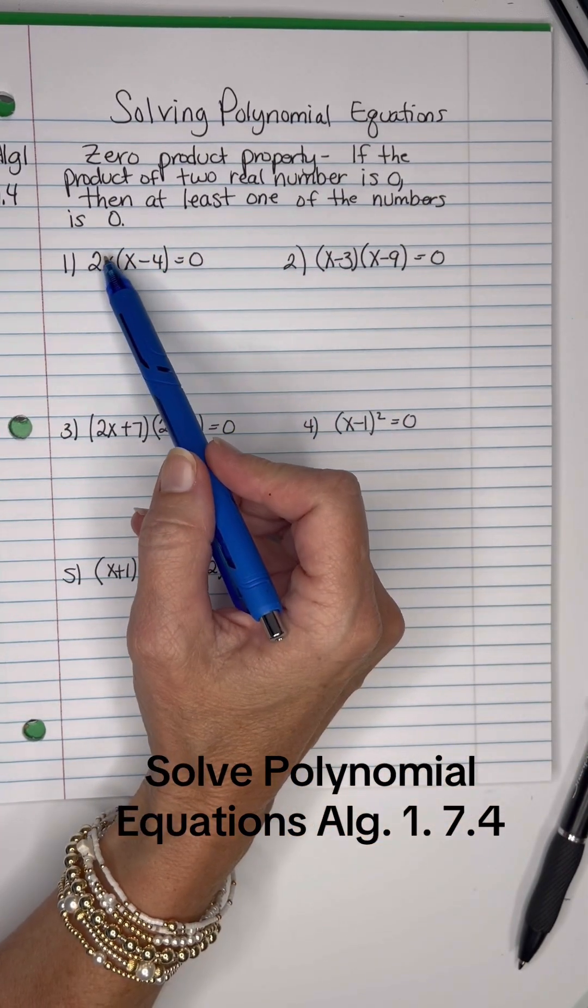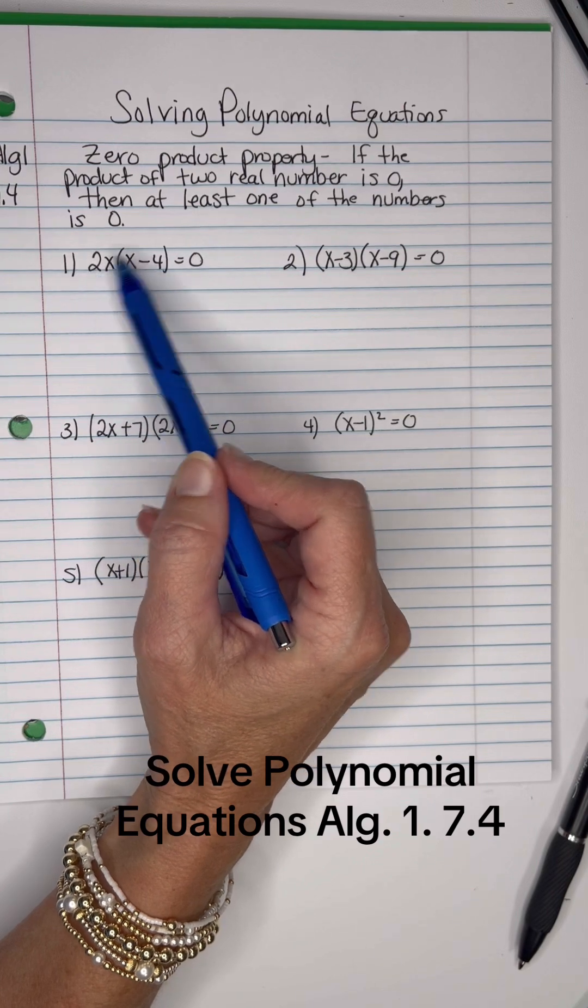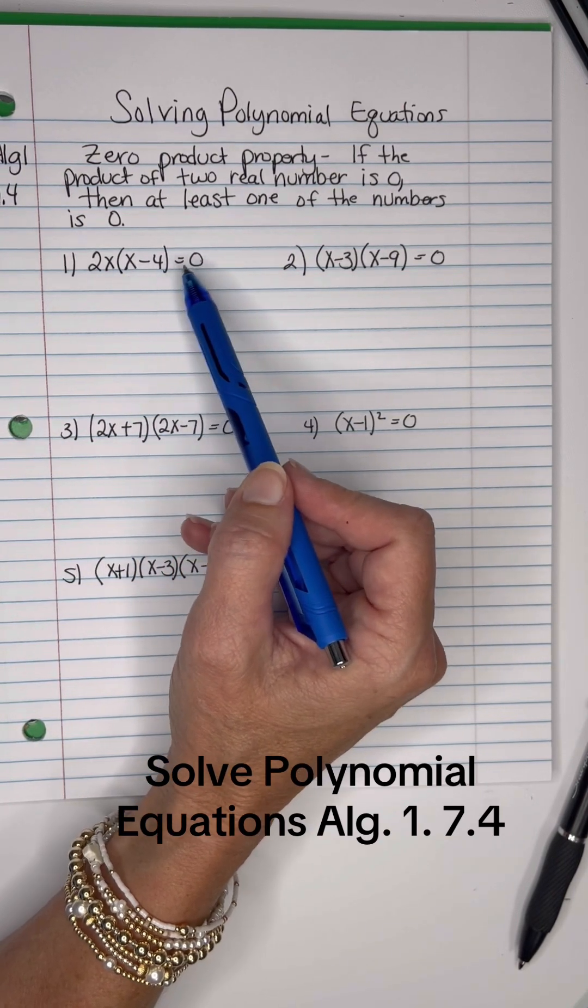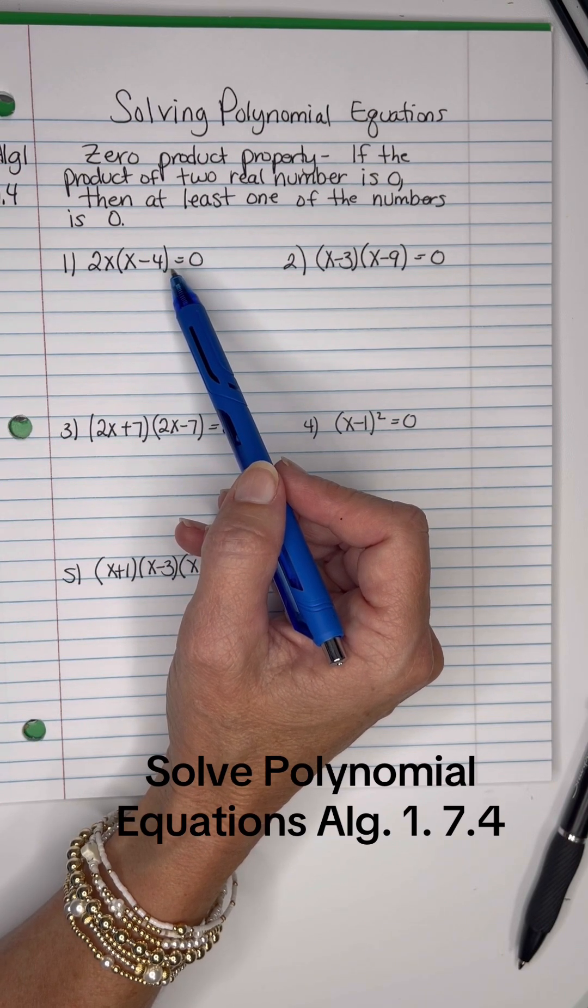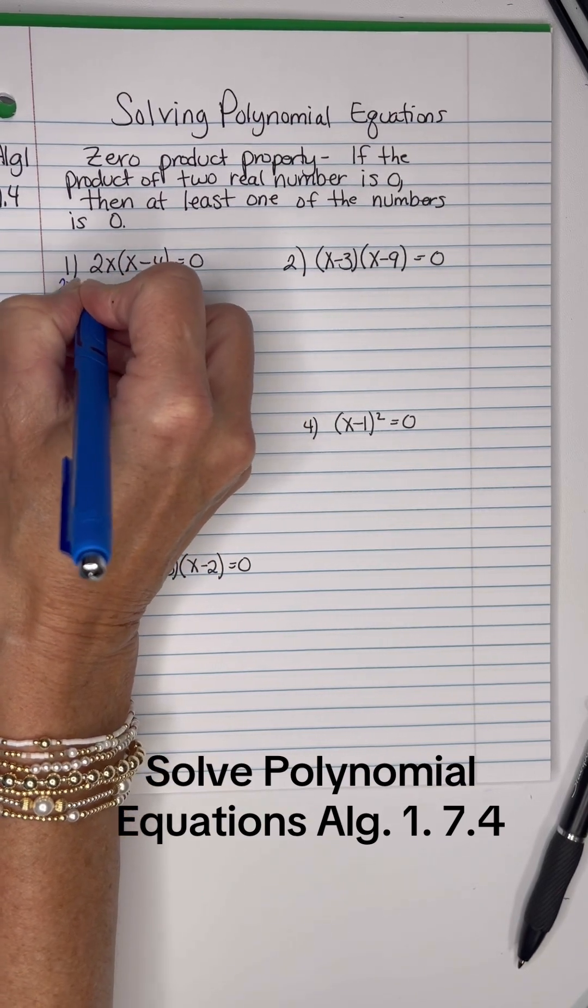So, for instance, in this problem 2X parentheses X minus 4 equals zero, either the 2X equals zero or the X minus 4 equals zero. I'm going to work this out showing you the details, but then I'll also show you how to do this just kind of in your head. If either one of these equals zero, then 2X equals zero.